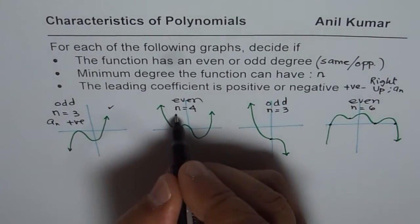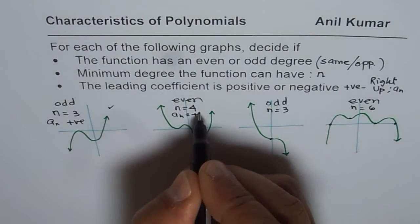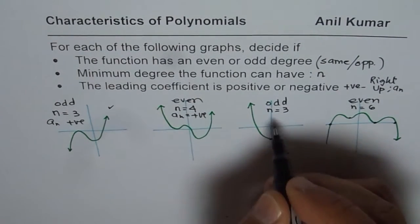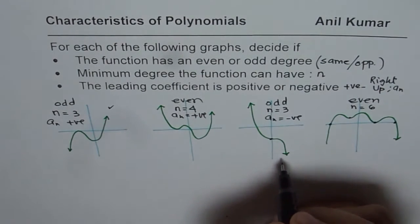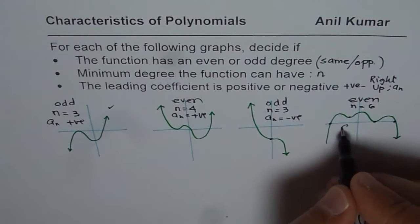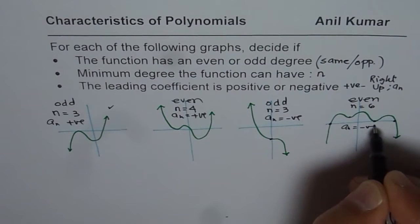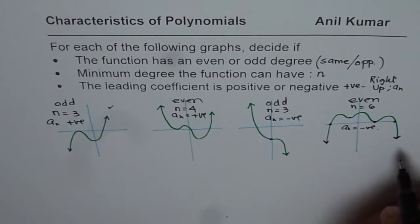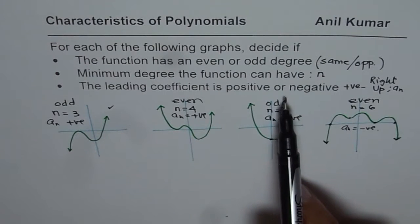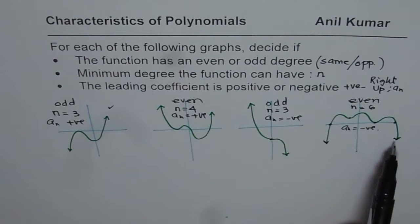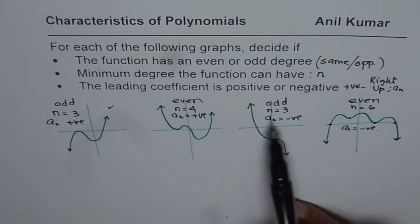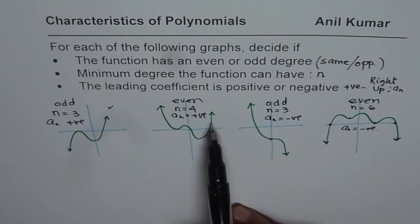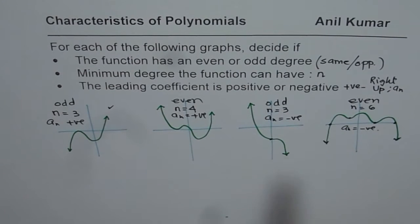So, right side is up, so a_n is positive. Here, it is down, so a_n is negative. So, leading coefficient is negative in this case, and also here, a_n, the leading coefficient is negative, since the right side is down. So, for the leading coefficient, positive or negative, you just need to check the right side is up or down. If it is up, then it is positive, as in first two cases, and if it is down, then it is negative.